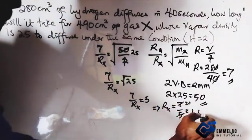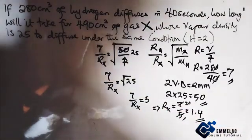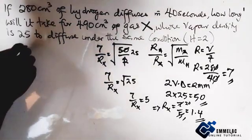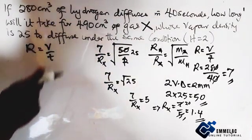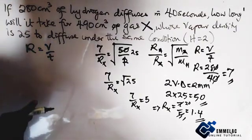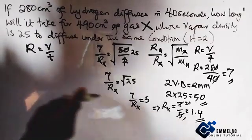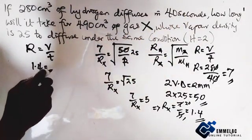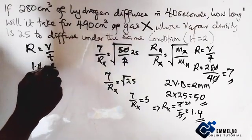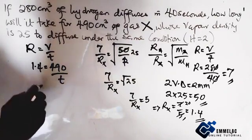We're getting the rate of diffusion for the gas X. We have that R equals to V over T where T is the time. So we are asked how long, so here we have 1.4 equals the volume 490 over T and here we cross multiply to get T equals to 490 over 1.4.